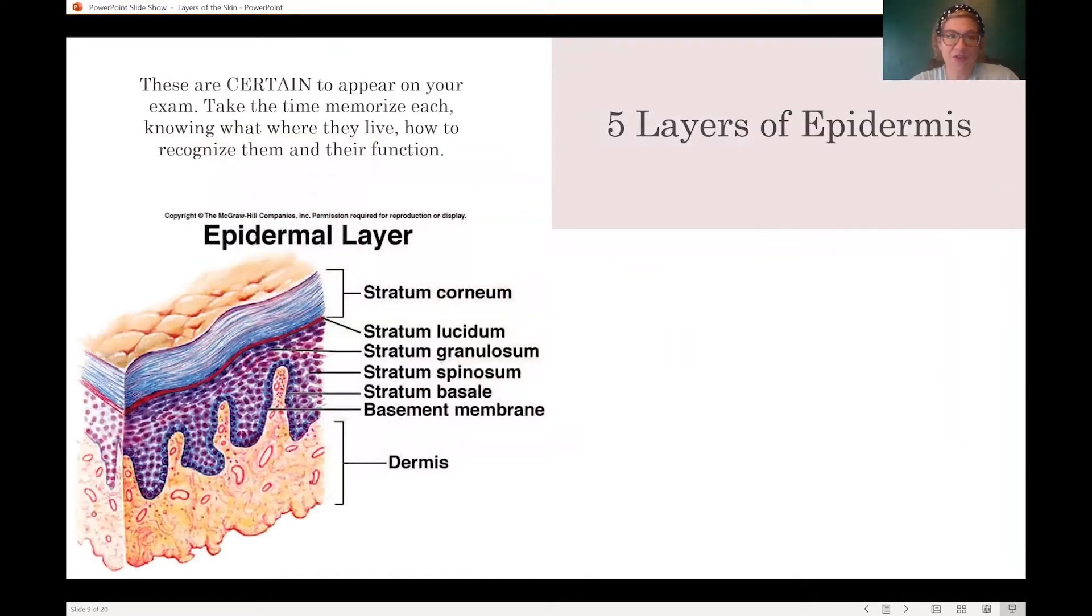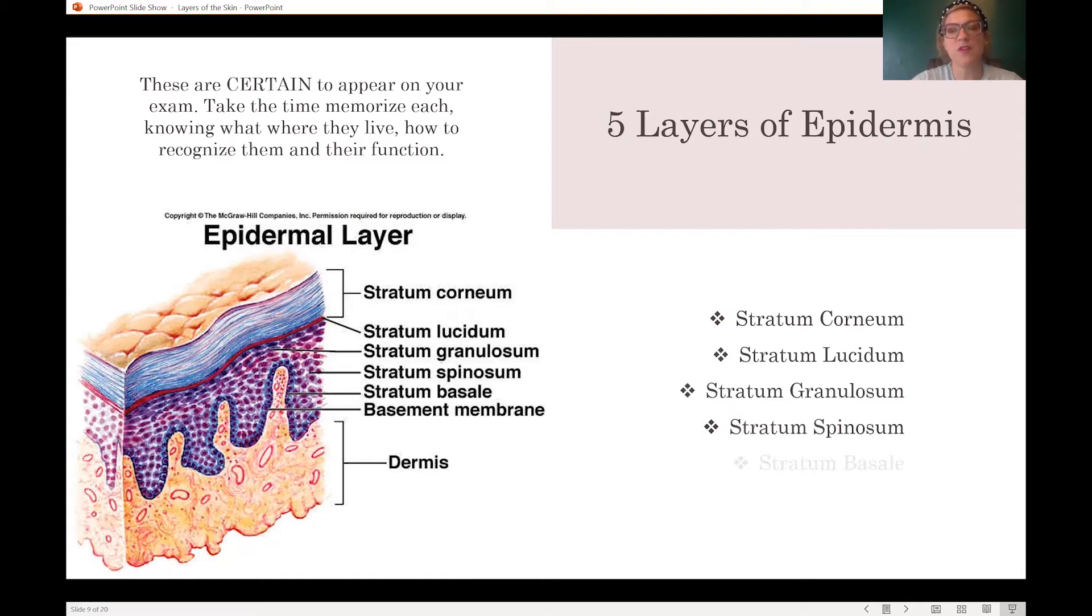There are five layers of the epidermis. These are certain to appear on your exam in some way. I don't care what state you work in. It will show up on your exam. So take the time to make some flashcards, use some Quizlet. Memorize each layer, know what is in each layer, how to recognize them and any function that they might bring to the table because your state exam could ask any of it. If you are an aesthetic student, same thing. You really got to know what's going on in these layers. So make some flashcards and be prepared for them to show up on your test. So the five layers are the stratum corneum, the stratum lucidum, the stratum granulosum, the stratum spinosum, and the stratum basale.